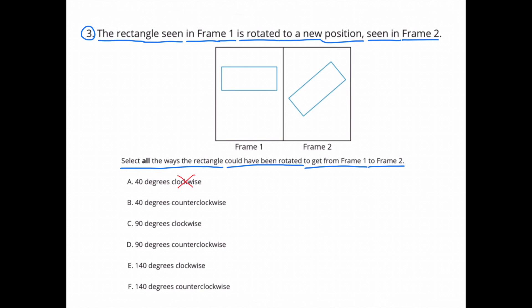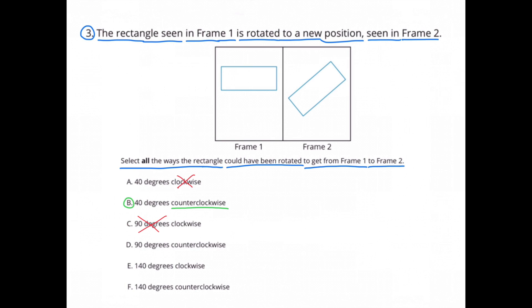I didn't select A because it didn't appear to have moved clockwise. I did select B because 40 degrees counterclockwise would work. I did not select C because it didn't move 90 degrees clockwise.